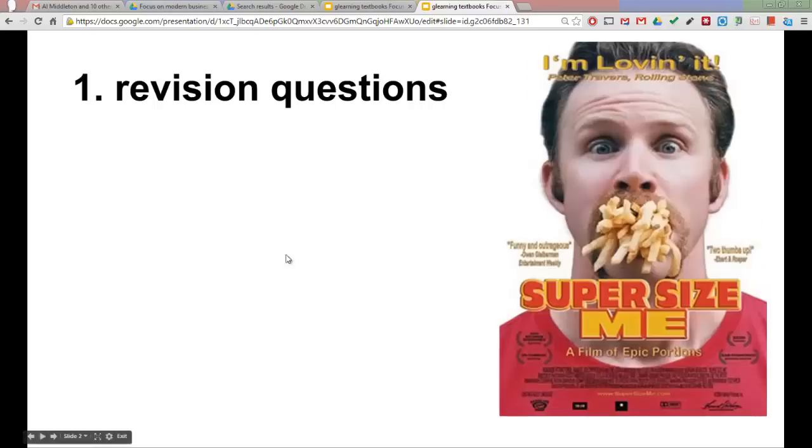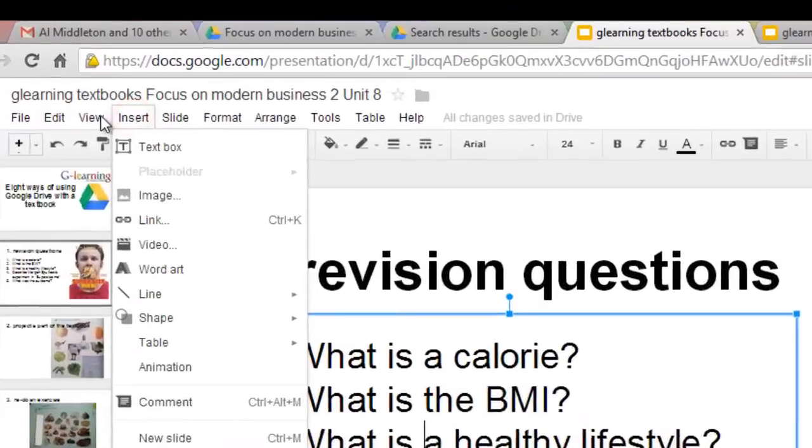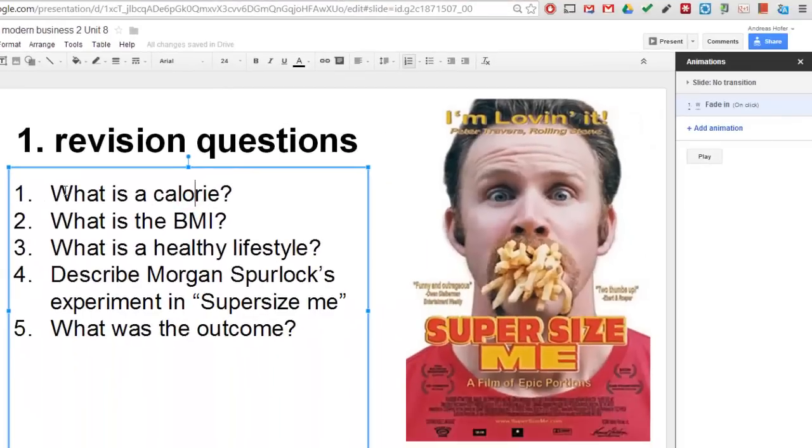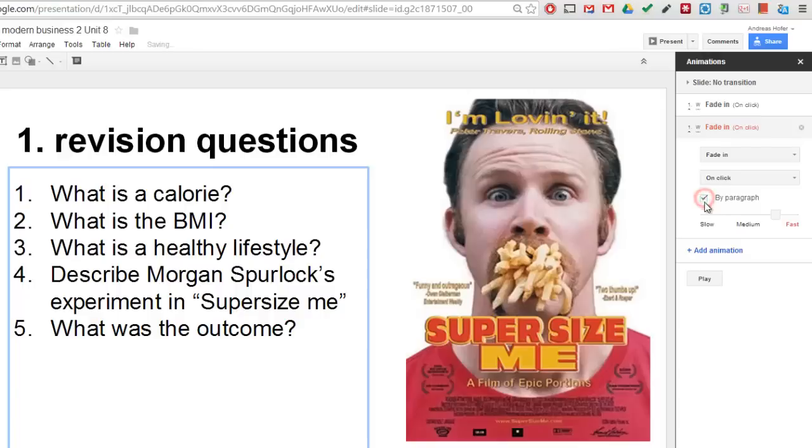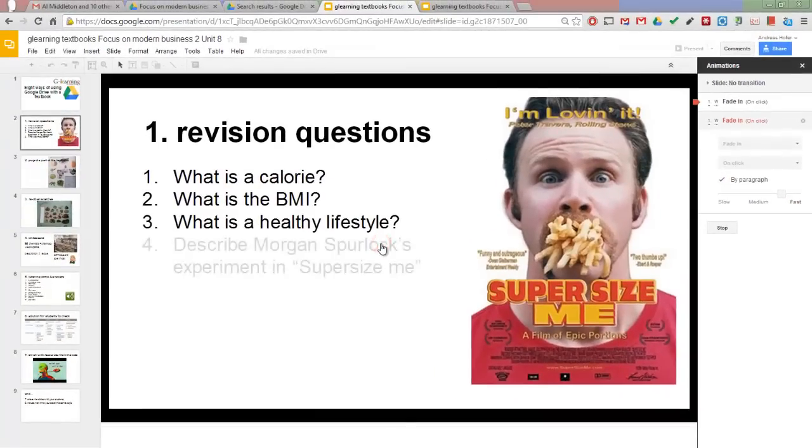Number 1: Use it for revision questions. Just revise the previous unit. You can easily animate text by going to View Animations, and then you simply click into the text box, add an animation by paragraph. And each paragraph is animated separately.